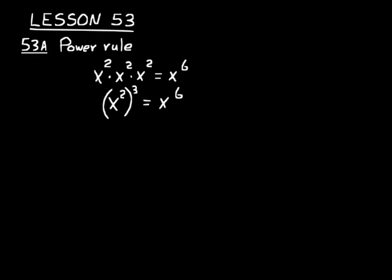2 times 3 is 6. So to write this in terms of any variable and any exponent, you would say x to the m raised to the n equals x to the m times n.